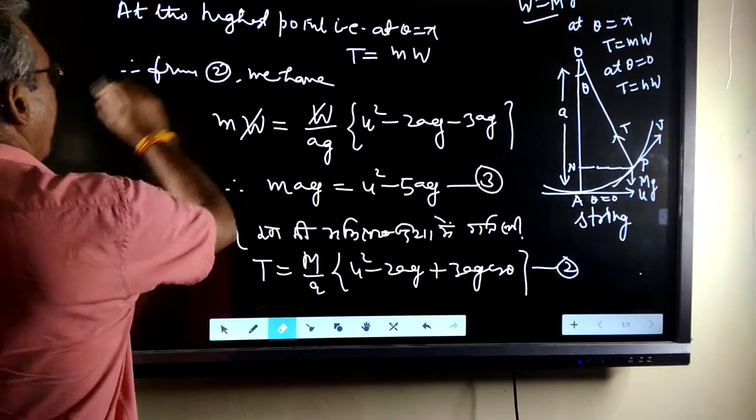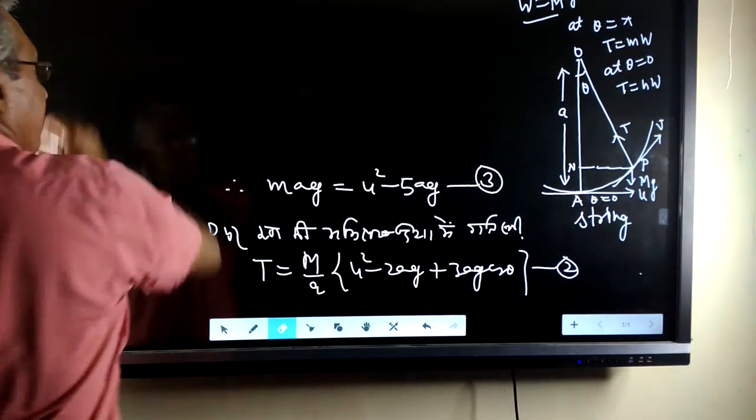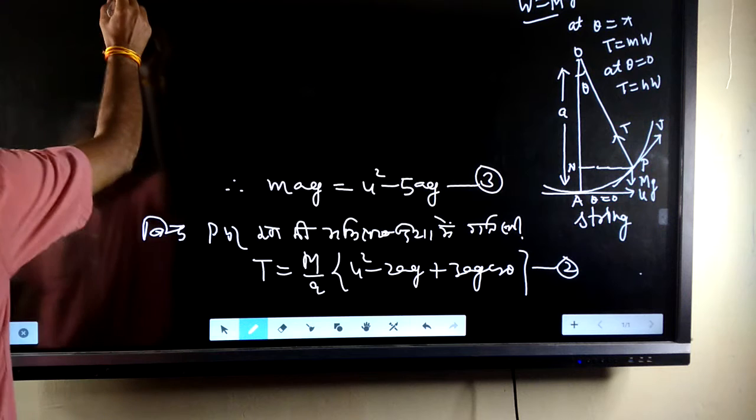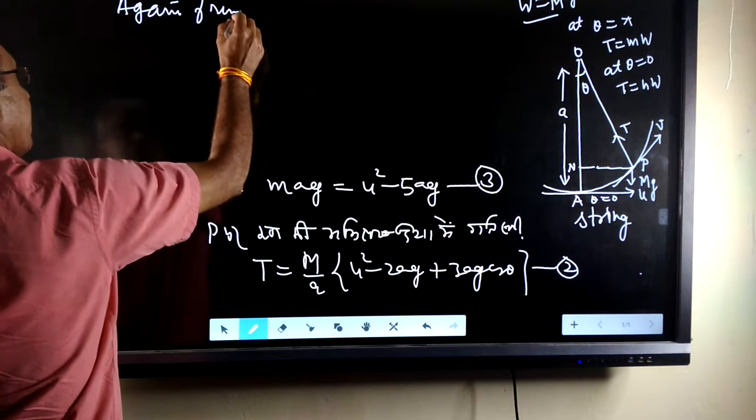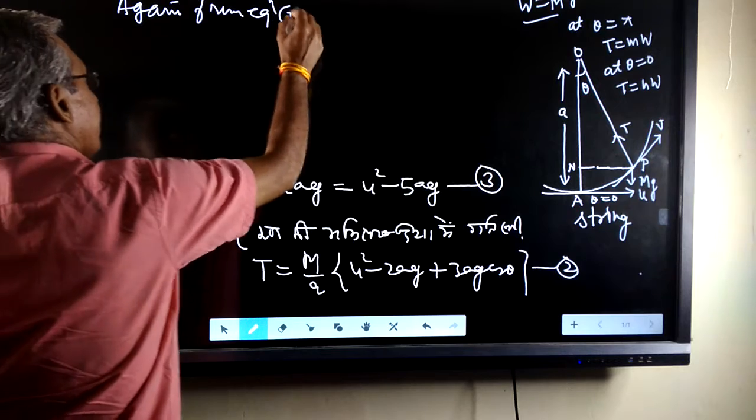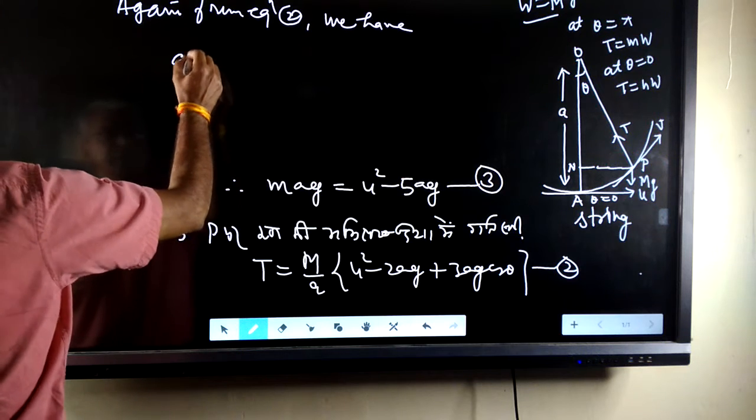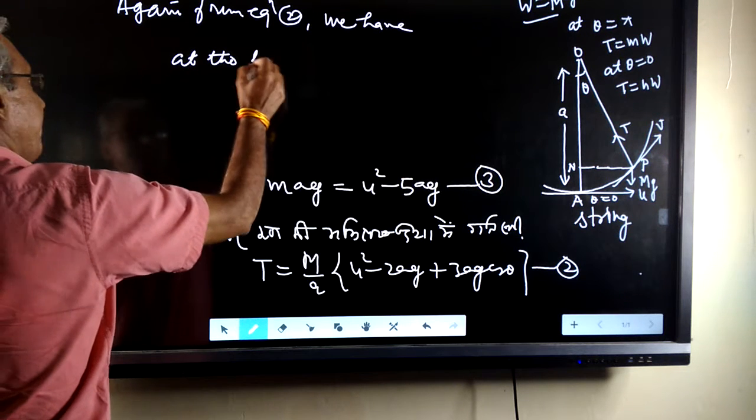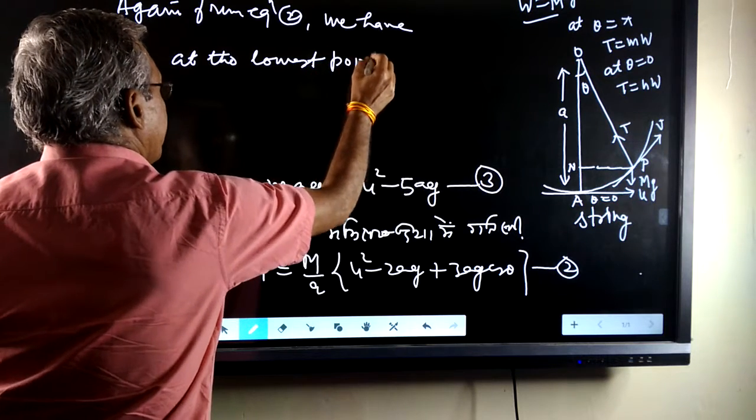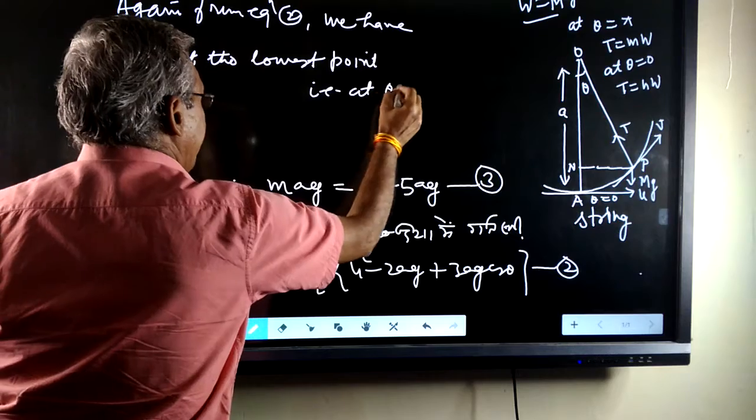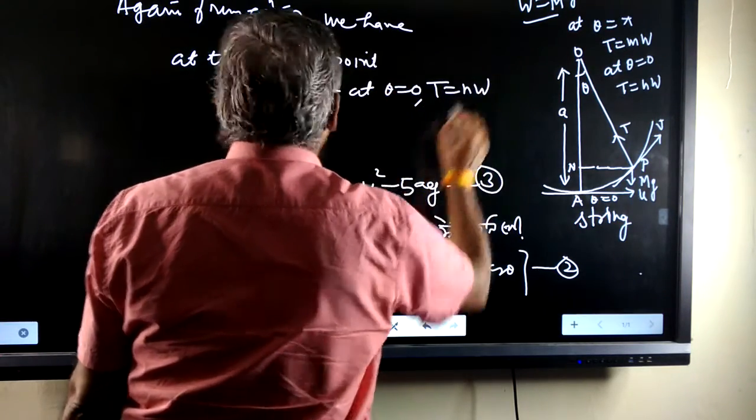Again, from equation second we have, it is given that, at the lowest point, that is, at theta equal to 0, T equals to nw.